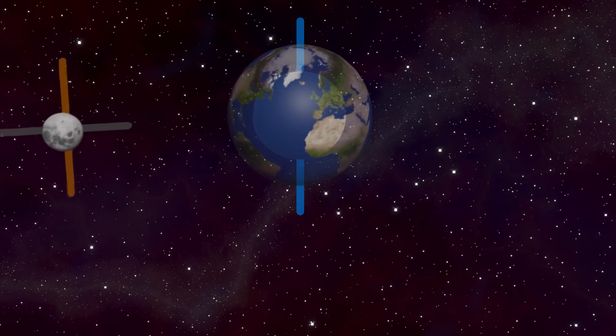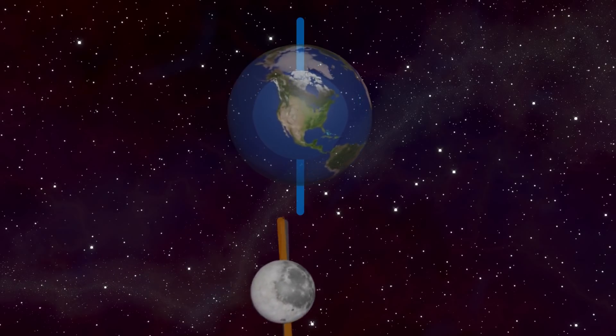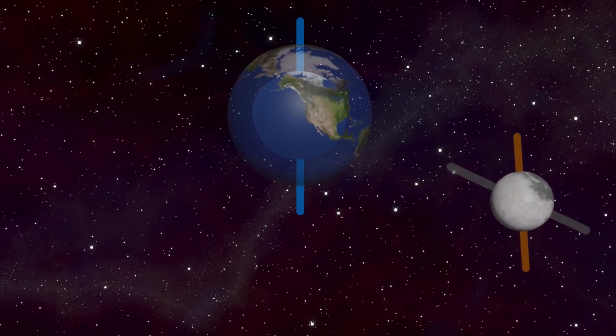Thus the correct explanation why the moon always faces earth on the same side and does not rotate in any direction. This is why we only see the same side of the moon from earth.